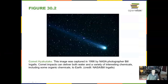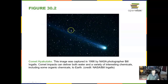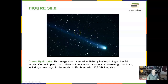Here is Comet Hayakotake. This was taken in 1996 when it went wide in March, its closest approach of just over 9 million miles. I took an image just like this in front of a big telescope dome, and also another picture that shows Comet Hayakotake in more false color at a wide field of angle.